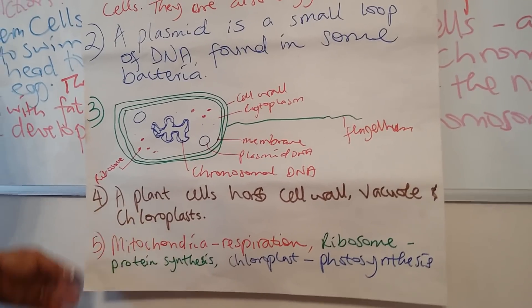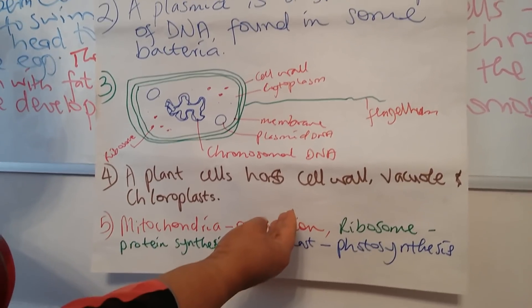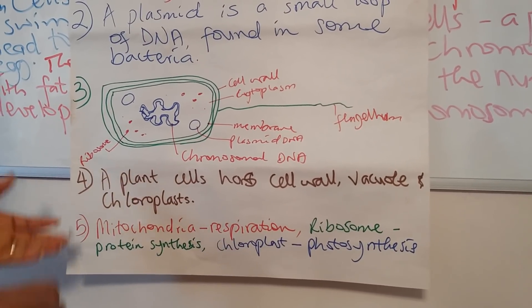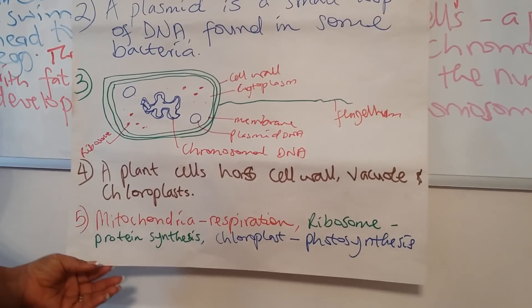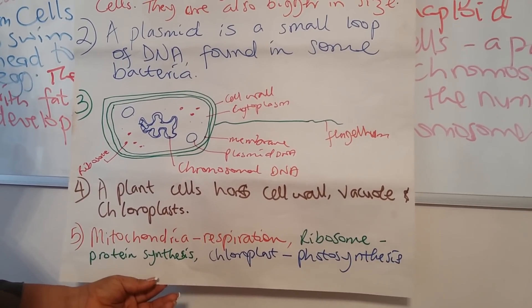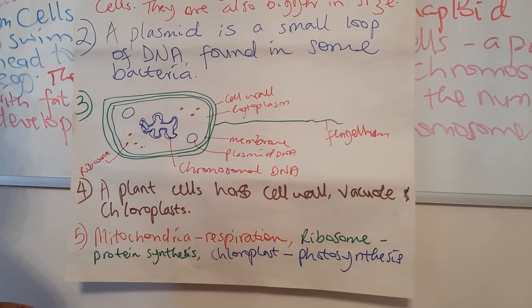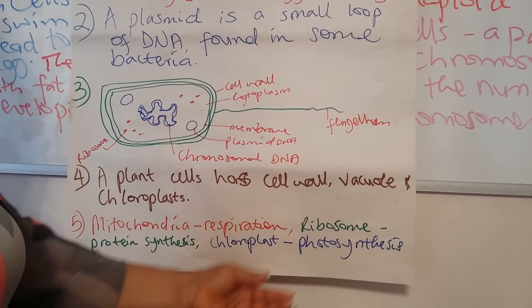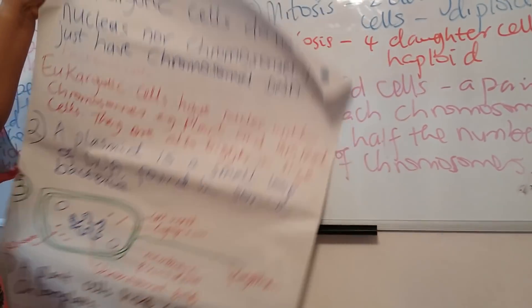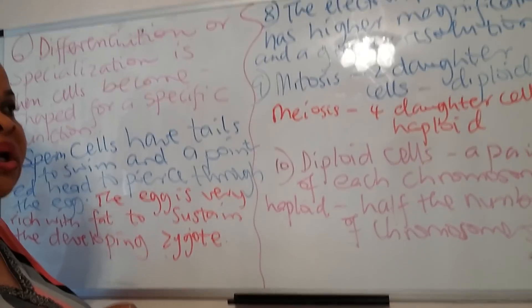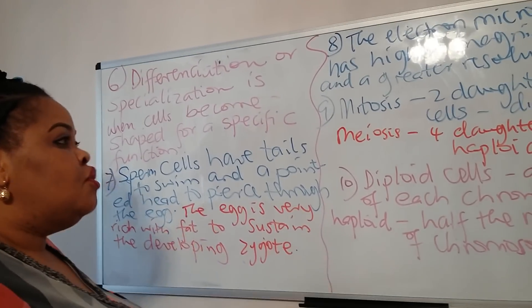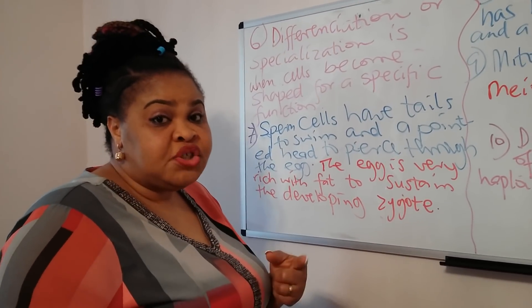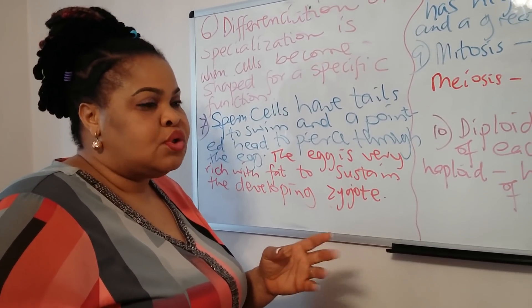Number four: the things a plant cell has that animal cells do not have are the cell wall, the vacuole, and the chloroplast. All the other features are by and large the same in a plant and an animal cell. The specific functions of organelles you find in the animal and plant cell: mitochondria is where respiration happens; ribosomes are involved in protein synthesis; and chloroplasts in plant cells are involved in photosynthesis. The cytoplasm is a jelly-like material where all reactions happen. The nucleus in both plant and animal cells contains the DNA. The cell membrane controls what goes in and out of the cell.